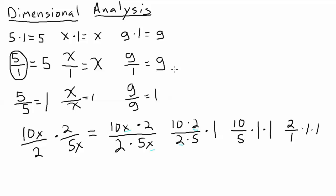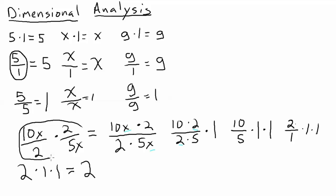Now the second rule comes into play — anything divided by 1 is itself. So 2 divided by 1 is just 2, and then we have 2 times 1, which by the first rule is just 2. So we started with two fractions multiplied together, with X's and other terms, and the answer from all of that turns out to be a simple 2. We found that answer by following these three fraction rules. That's a brief refresher on how multiplying fractions works.